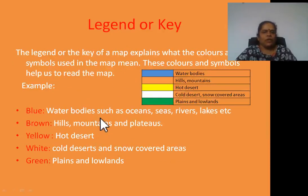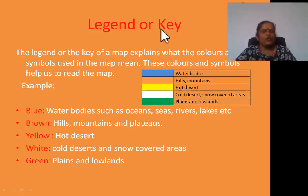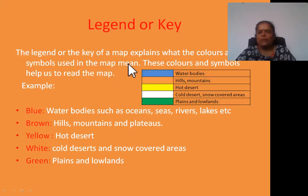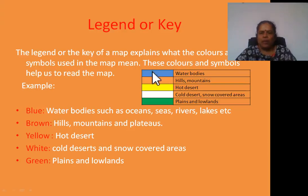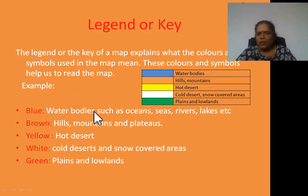Next: language of a map — legend or key. Why do you use a legend or key? The legend or key of a map explains what the colors and symbols used in the map mean. These colors and symbols help us to read the map. All maps have some colors which indicate certain content. Blue color in a map indicates water bodies such as oceans, seas, rivers, lakes, etc.